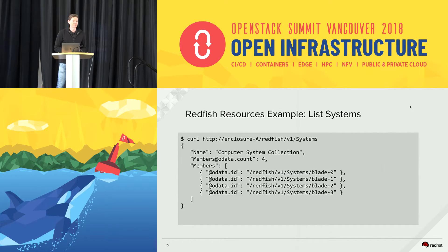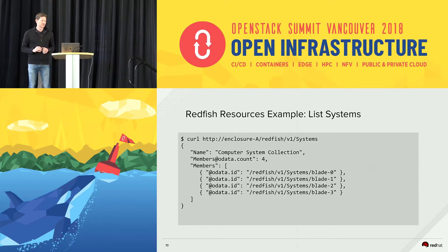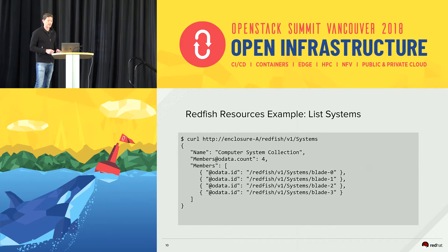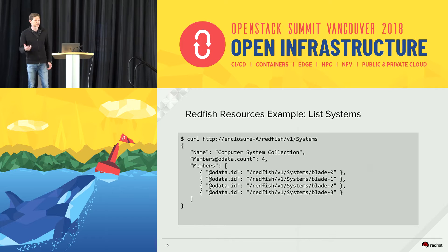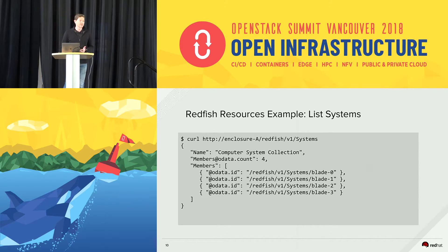Let's see an example — probably one of the best ways to get the idea of how to interact with Redfish and include it in your automation or scripts. In this case, we are listing a number of systems. You just go to the API and say, 'give me a list of the systems you are managing,' so that later you can do individual operations with each of them.